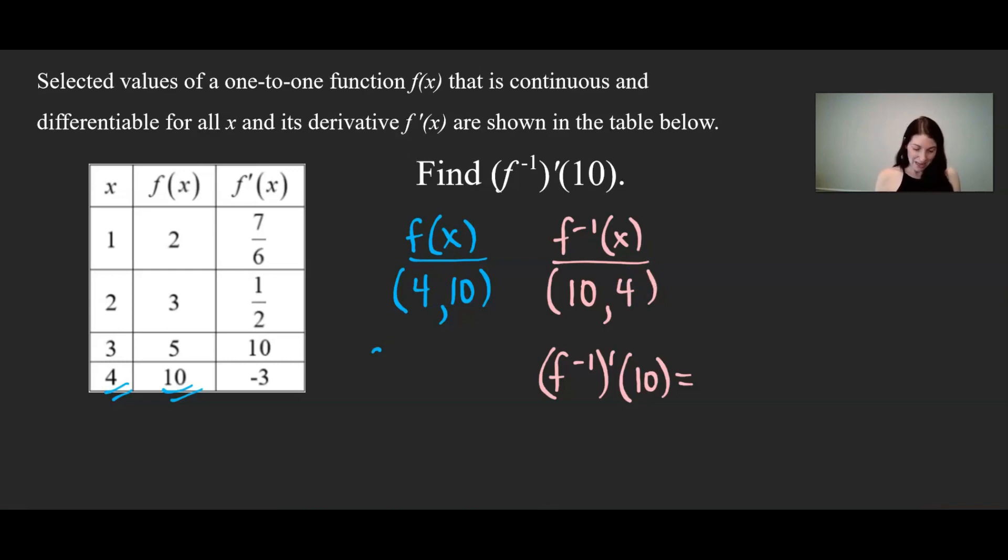Over here, I'm going to take the derivative of f(x) at its x value of 4. And I'm also going to get that value from the table. So when x is 4, the derivative of f(x) is negative 3.